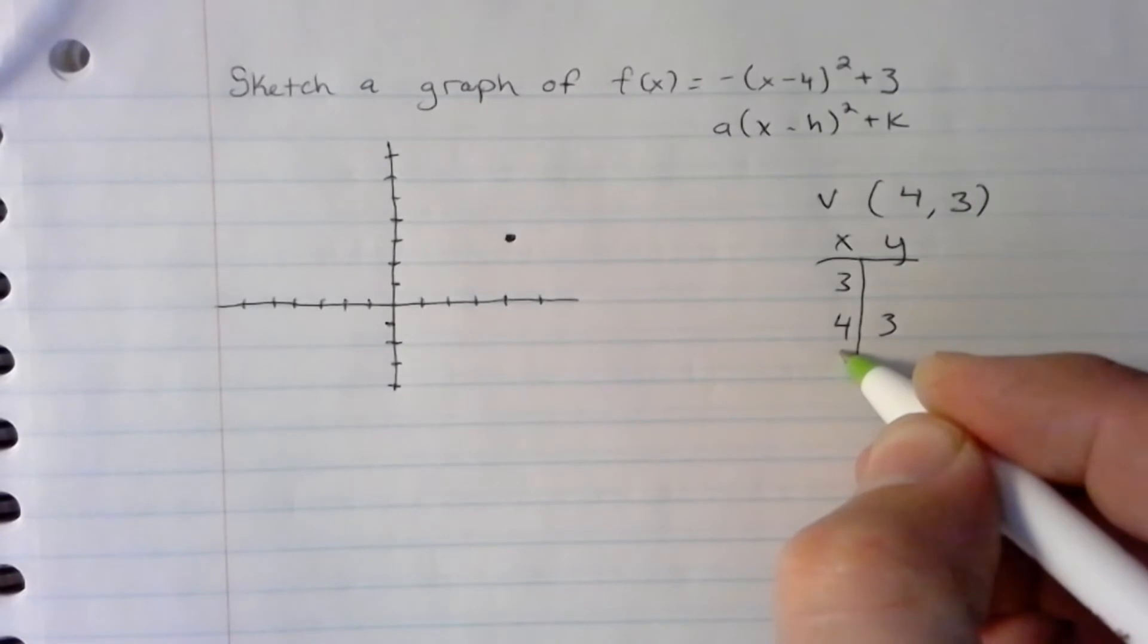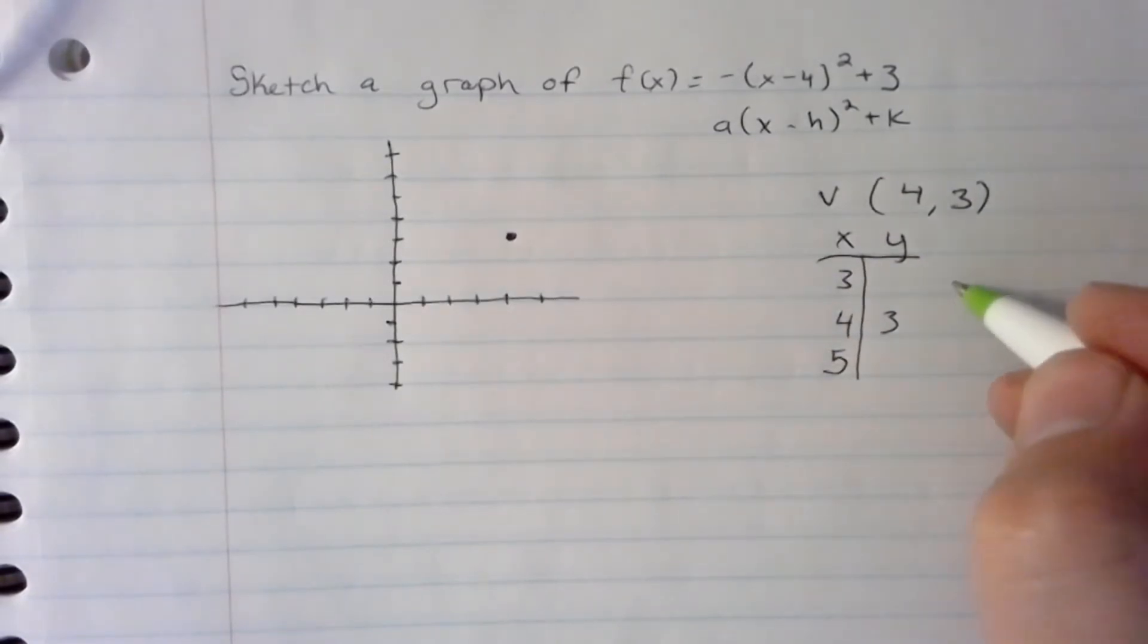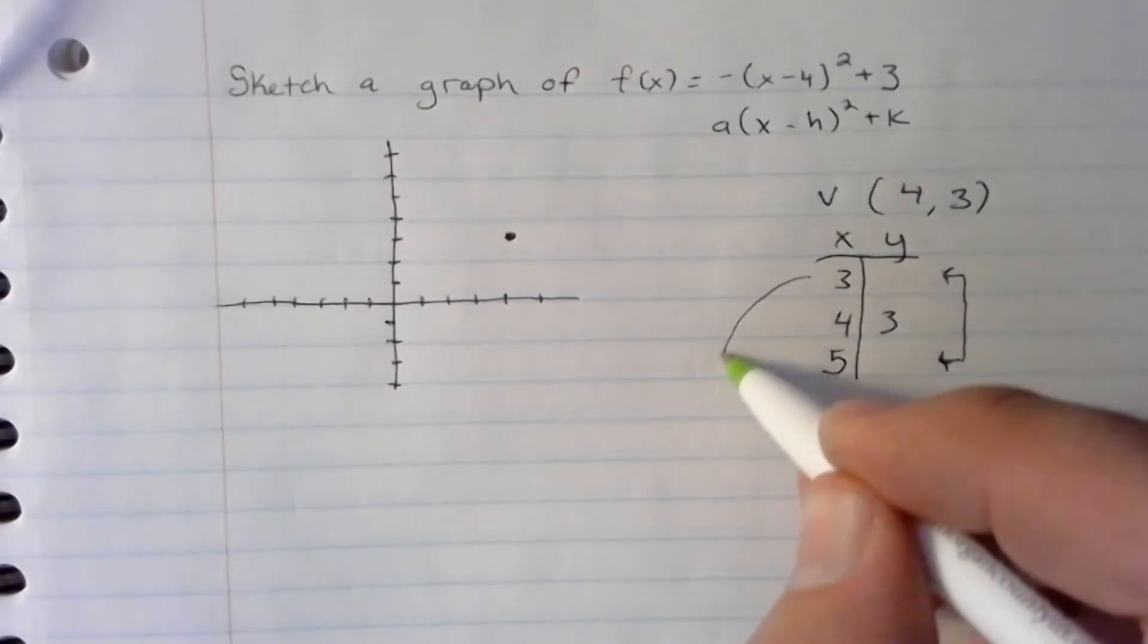Negative, quantity 3 minus 4, squared plus 3. Notice I put the 3 in for x. 3 minus 4 is negative 1. Order of operations: we do negative 1 squared, which gives us 1, then negative times 1, then add 3, which equals 2.